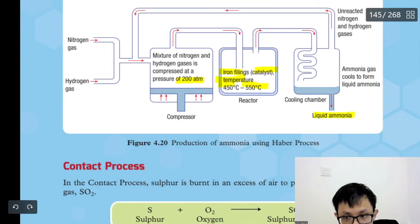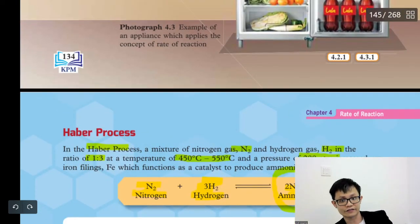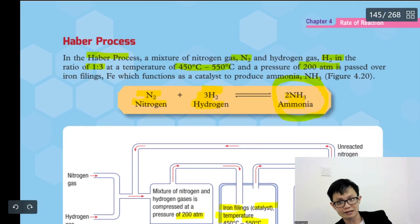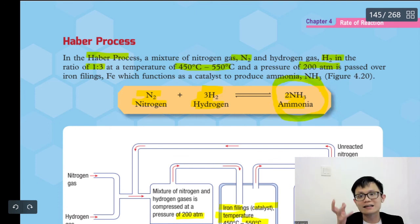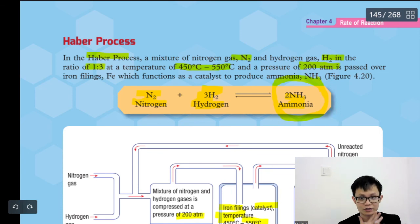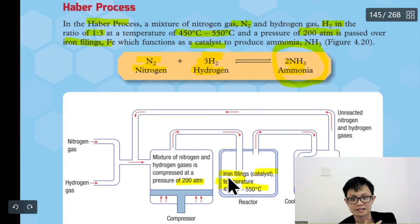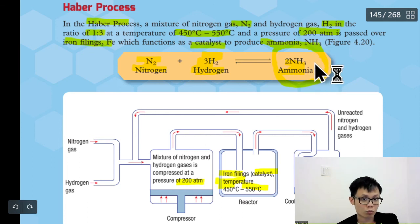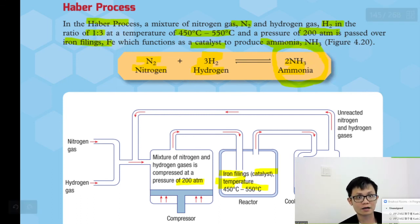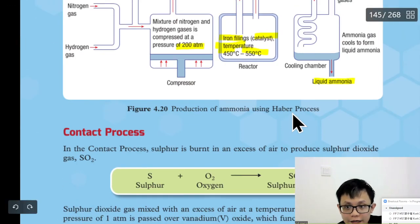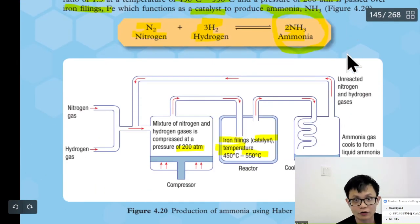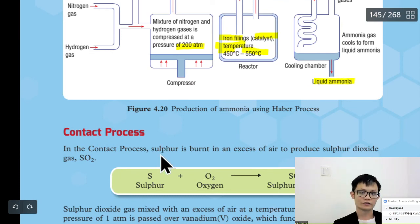For the Haber process, nitrogen and hydrogen produce ammonia. Questions can ask: what are the gases used? Nitrogen and hydrogen. What is the ratio? 1:3. What is the temperature? 450 to 550 Celsius. What is the pressure? 200 atmospheres. What is the catalyst? Iron filings (Fe). What is the product? Ammonia. What is this process called? The Haber process. I'll continue with the Contact process in the next video. Thank you and bye-bye!